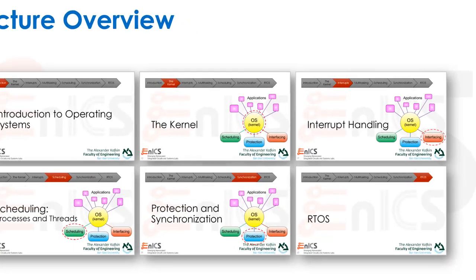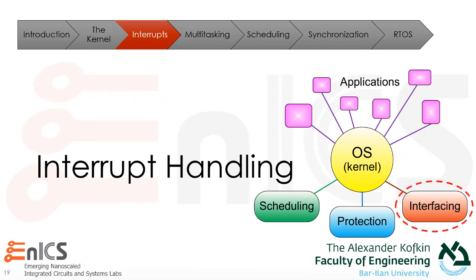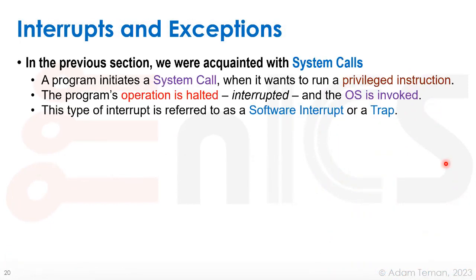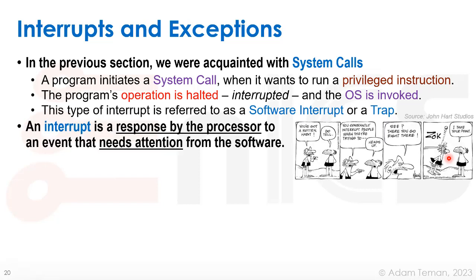Let's move on to the third part of our lecture, which is about interrupt handling. In the previous section we were acquainted with system calls — a program initiates a system call when it wants to run a privileged instruction, read a file, or do something like that. This halts the operation of the program and invokes the operating system. This type of interrupt is referred to as a software interrupt, or a trap. An interrupt is a response by the processor to an event that needs attention from the software.